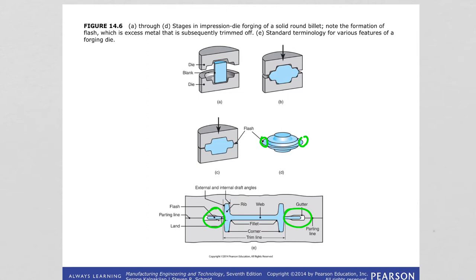Looking at an I-beam type shape: this part is called the rib, the middle part is called the web, these corners are the fillets, there are the corners, the flash is visible here, and the parting line separates the upper and lower die.